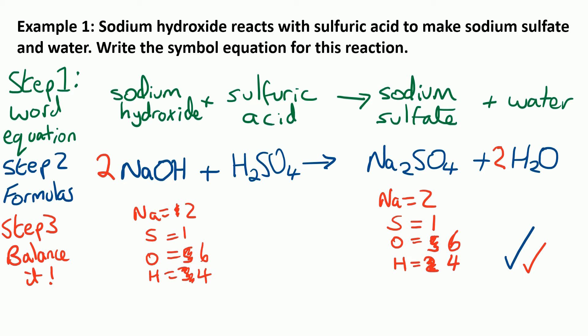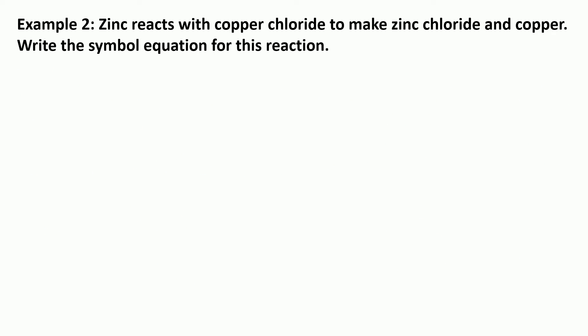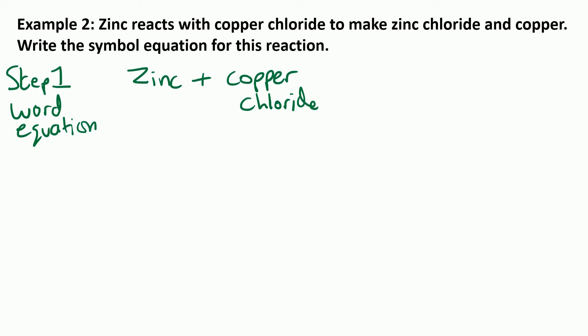Let's look at example two. Zinc reacts with copper chloride to make zinc chloride and copper. Write the symbol equation for this reaction. Step one: write the word equation — zinc and copper chloride are our reactants, and they turn into zinc chloride and copper. You should be able to recognise that as a displacement reaction where zinc is taking the place of copper because zinc is more reactive than copper — so we're making links to our previous learning.